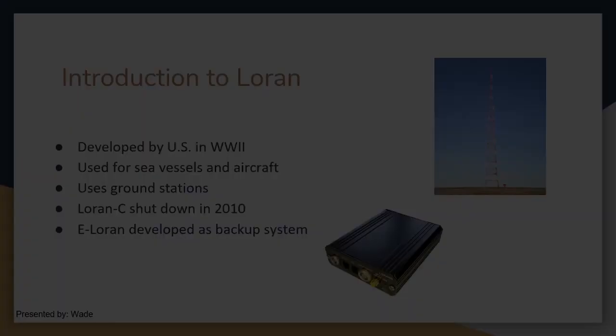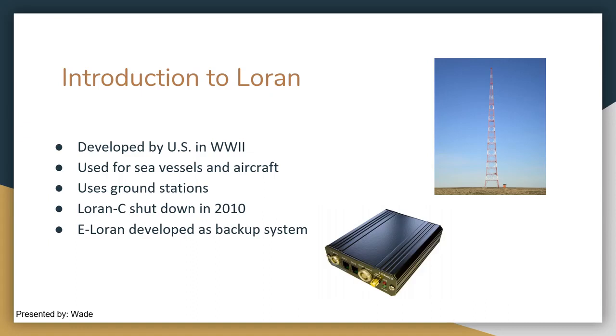Long Range Navigation, abbreviated LORAN, is a ground-based navigation system that was developed during World War II by the United States. Once operated by the US Coast Guard, LORAN-C was used for navigation by sea vessels and aircraft alike. LORAN-C does not use GNSS, but rather multiple ground stations that emit signals which are received by the LORAN-C equipment on the aircraft. The process is known as hyperbolic navigation.